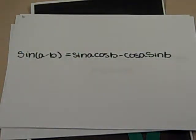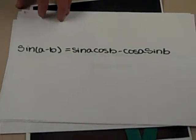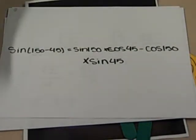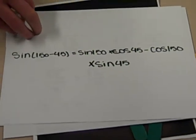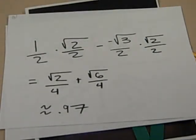Plugging in our known terms, we get sine of 150 times cosine of 45 minus cosine of 150 times sine of 45. Replacing the sine and cosine terms, we get 1 half times square root 2 over 2 minus negative square root 3 over 2 times square root 2 over 2.